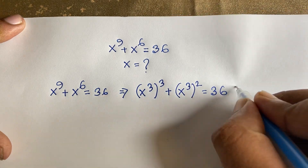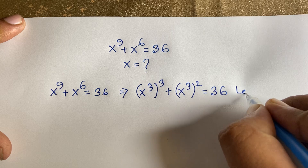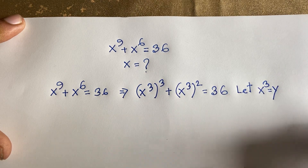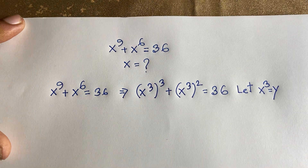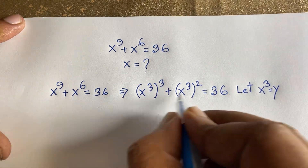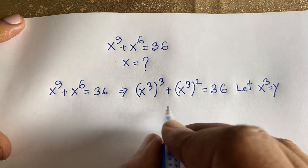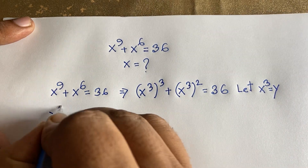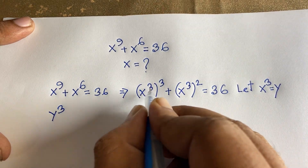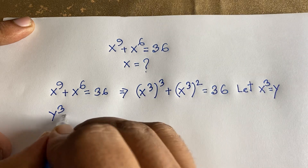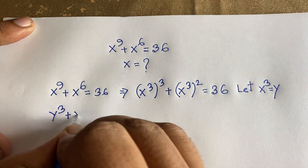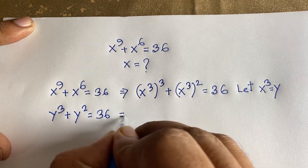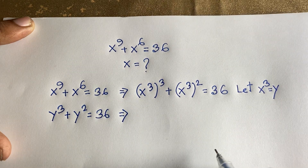Since x to the power 3 appears in both terms, we substitute y = x³. This allows us to rewrite the equation as y cubed plus y squared is equal to 36.